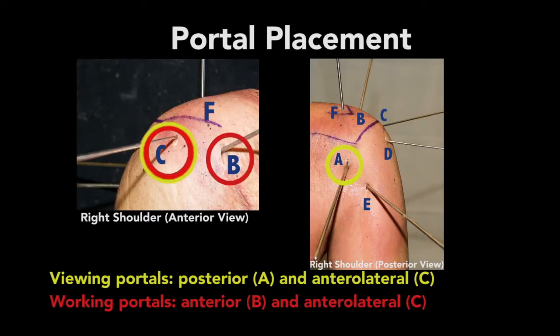A standard posterior viewing portal is created two centimeters inferior and one centimeter medial to the posterolateral edge of the acromion. The anterior and anterolateral portals are created under direct arthroscopic visualization.